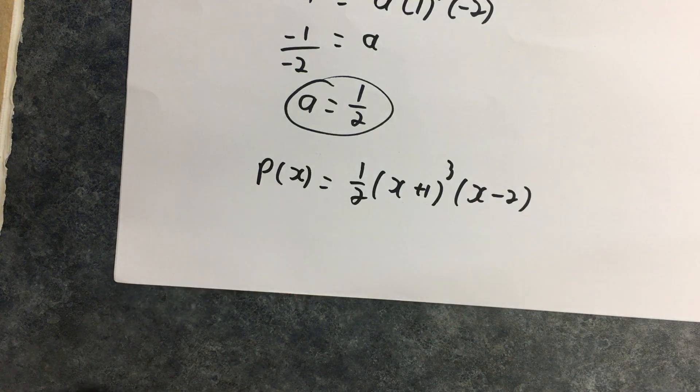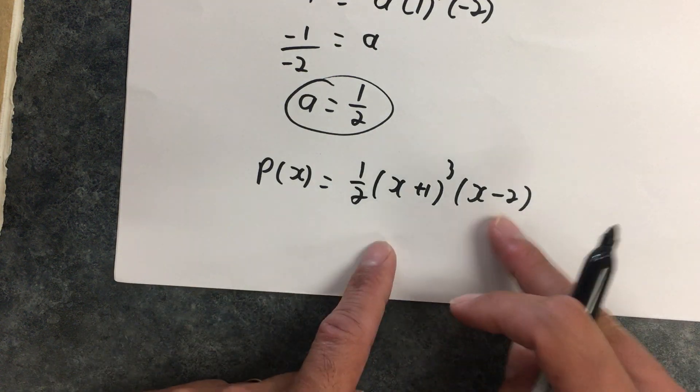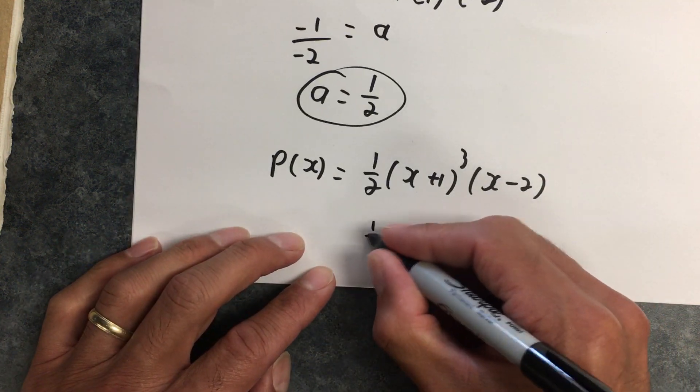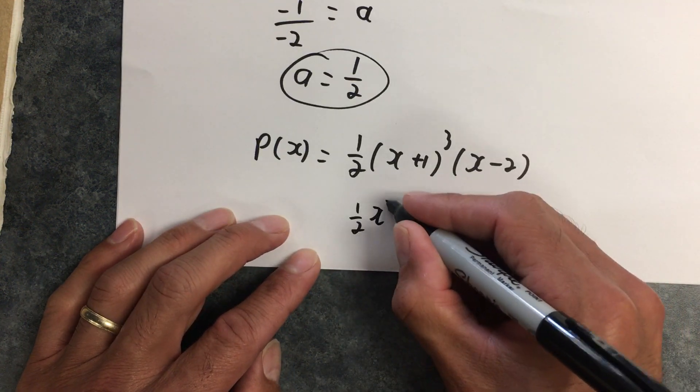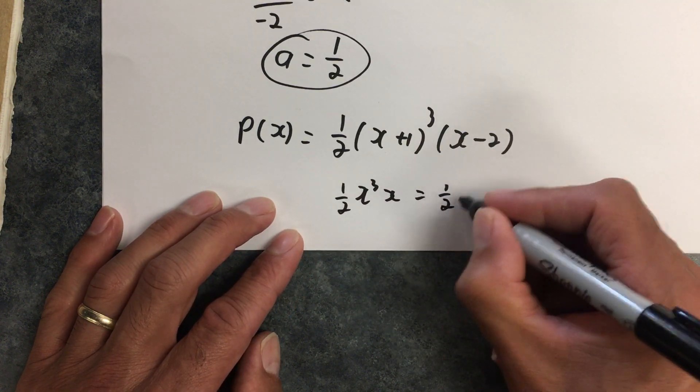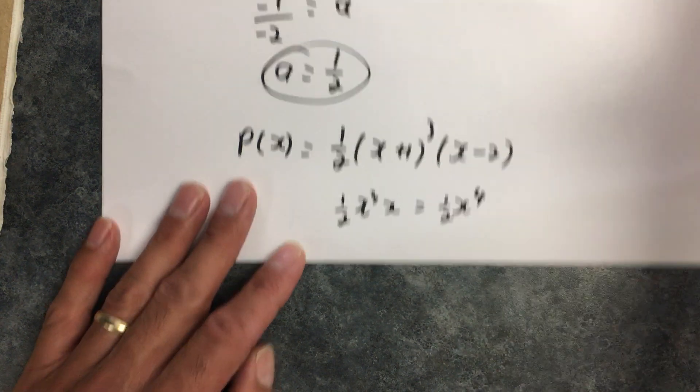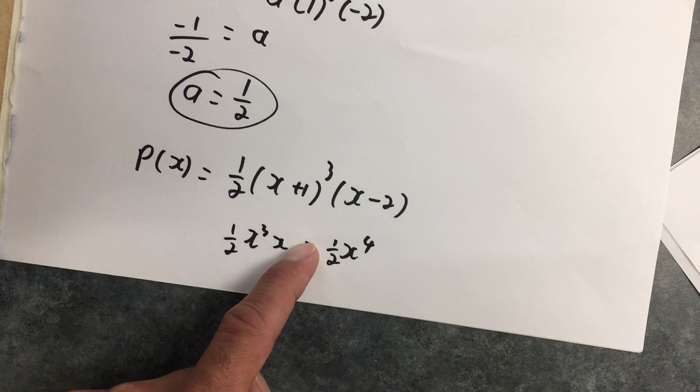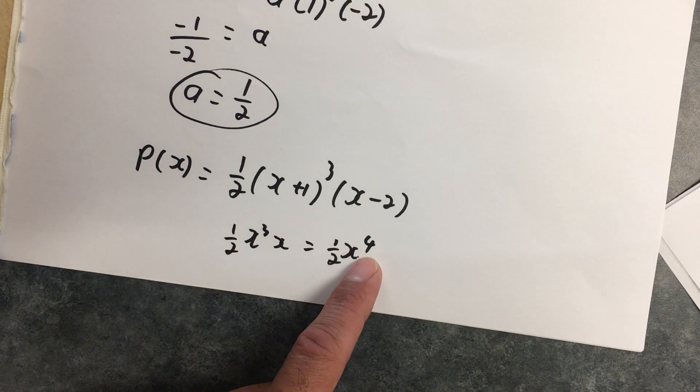You could expand that out so it looks more like a traditional polynomial if you like. This is clearly a fourth order polynomial because your leading term is going to be 1/2 x³ times x, which is 1/2 x⁴.